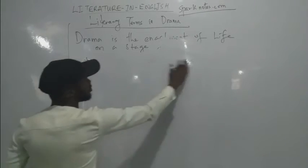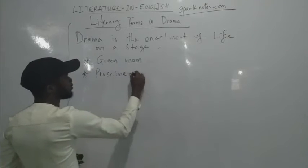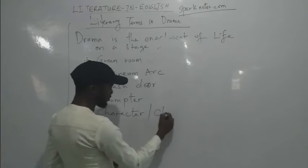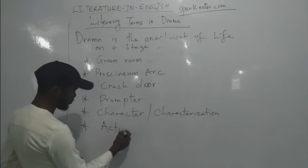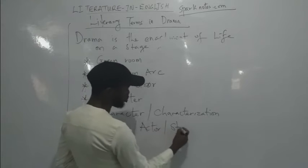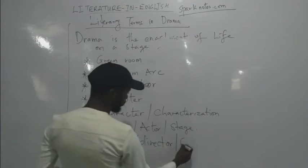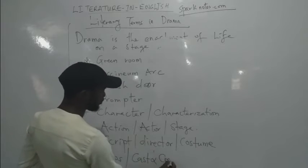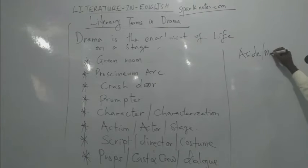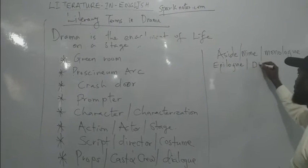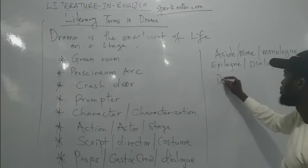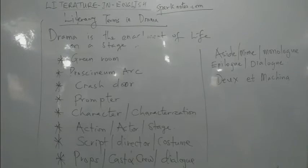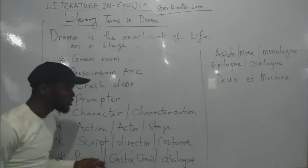Let me list some literary terms: green room, proscenium arc, crash door, promptor, character and characterization, action, actor, stage, director, costume, props, cast and crew, dialogue, aside, mime, epilogue, and monologue. Let's touch on these quickly because of time.